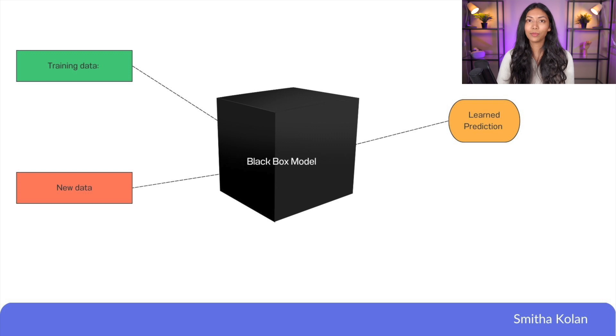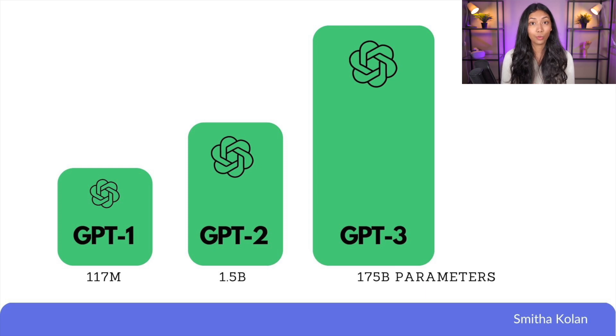When you have something which works like a black box model there are quite a lot of disadvantages, because you can't really understand exactly how it works. That is the issue with having really large language models like ChatGPT or GPT-3 — you don't exactly know how it works simply because of the huge amounts of parameters within it. It's really hard to figure out why it's giving you a certain type of output based on its prompt, and that makes it difficult to understand how to best make use of ChatGPT to get the output you're looking for.